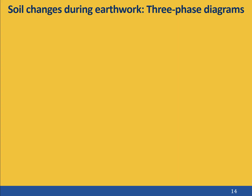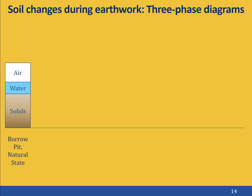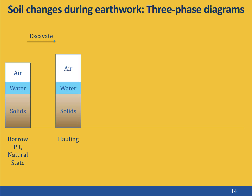The soil undergoes a number of changes during the earthwork process. We will use three-phase diagrams to illustrate how a soil changes during the earthwork process. In its natural state at the borrow pit, a given amount of soil will contain certain amounts of mineral solids, water, and air. When we excavate the soil in preparation for hauling, the amount of solids and water won't change, but the total volume will increase because the excavation process will loosen the soil. The only way the total volume can increase is to increase the volume of the air. We call this phenomenon bulking.